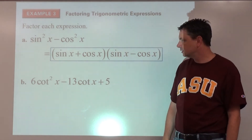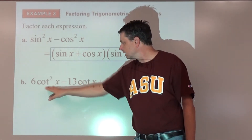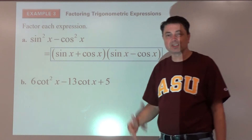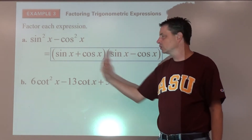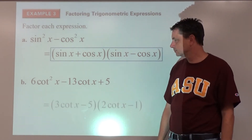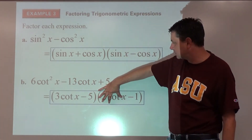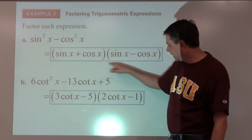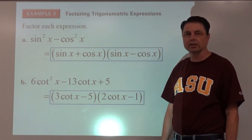Part b: we have a trinomial that's quadratic in form. Think of cotangent squared x like x in a regular quadratic — this is equivalent to six x squared minus thirteen x plus five. Factoring gives us three cotangent x minus five, times two cotangent x minus one. Checking outside and inside: negative three cotangent x plus negative ten cotangent x gives the needed negative thirteen cotangent x.